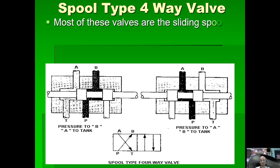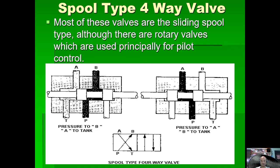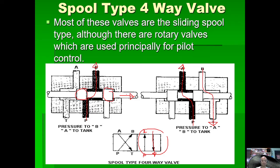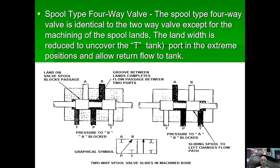This is a spool-type 4/2-way valve. If you move the spool from the right position: port P connects to port A, and port B connects to tank T. If you look at the left side of the spool, P connects to B, and A connects to T. Moving the spool left to right activates P-to-B and A-to-T.